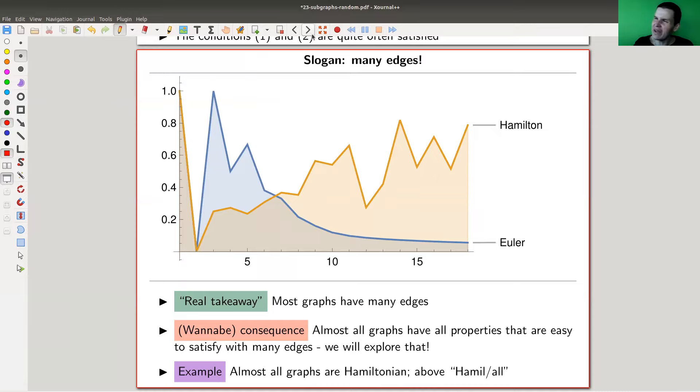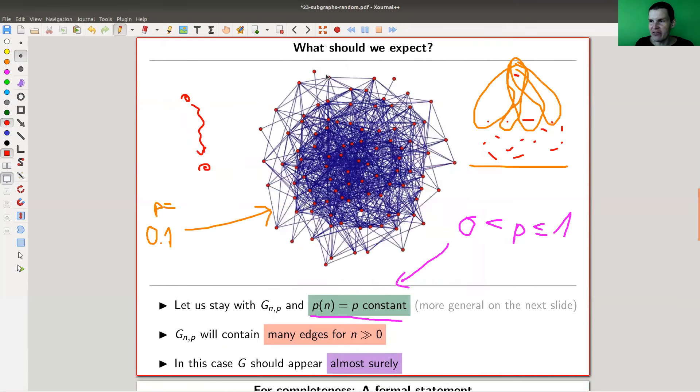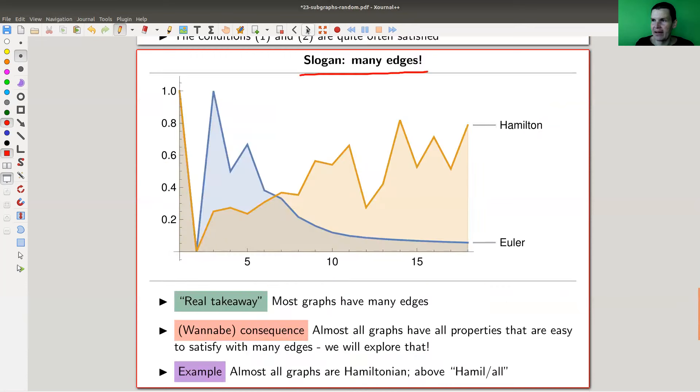But the takeaway message is that these guys tend to have like really many many edges, like many many edges. Keep this picture here in mind, this was just probability 10 percent and a lot of edges.